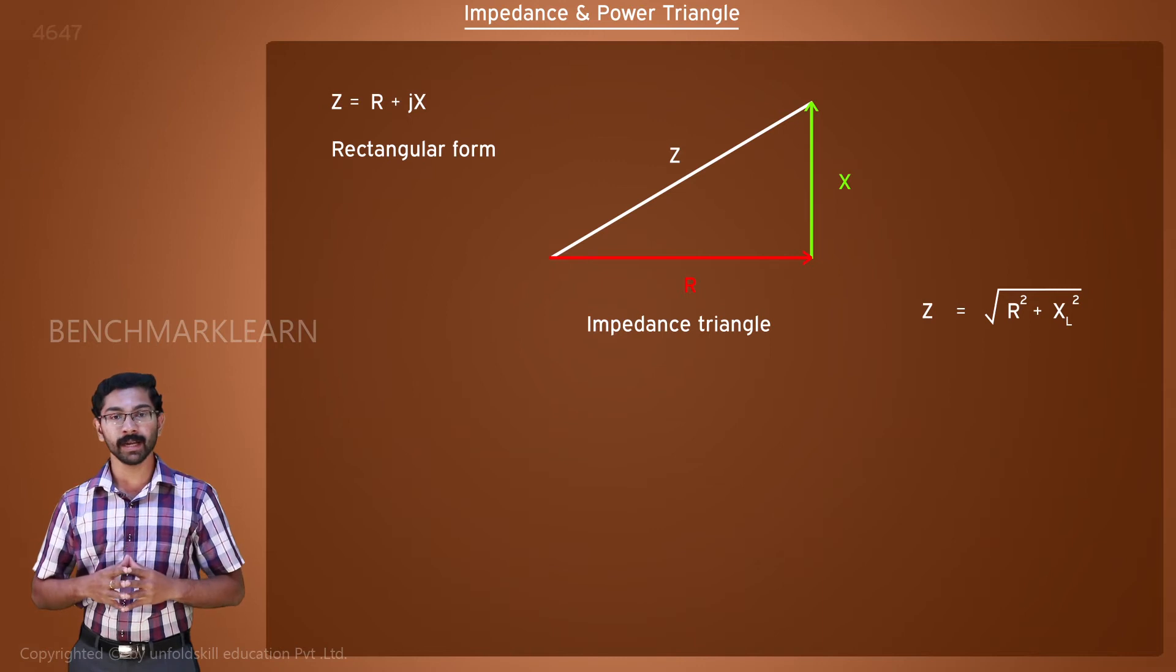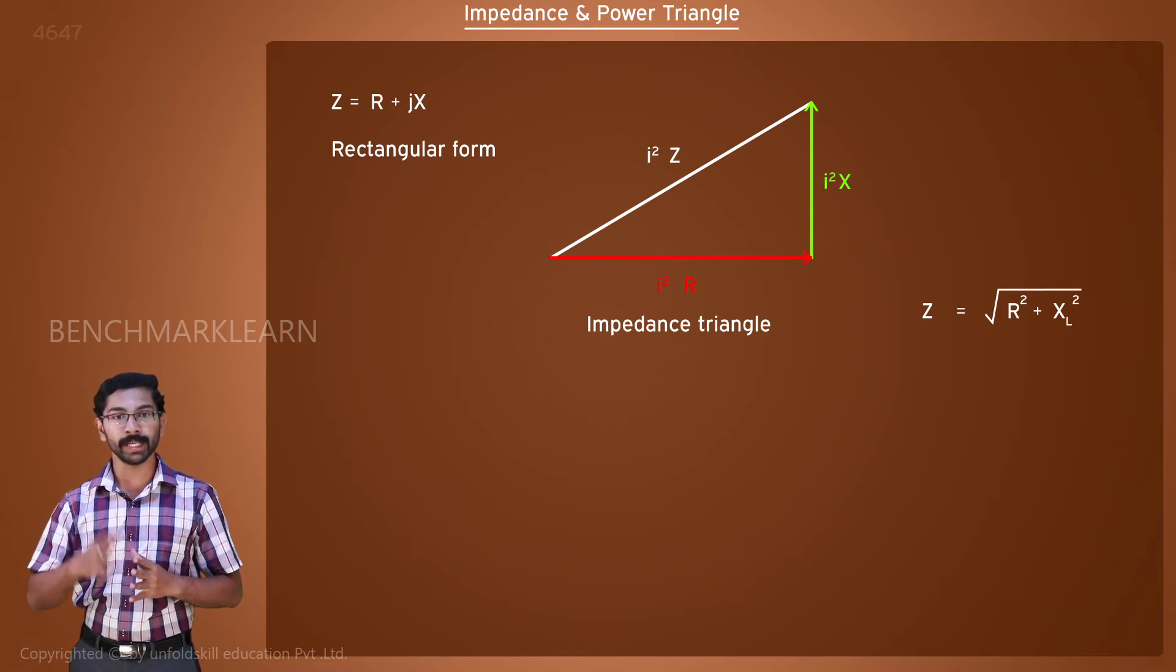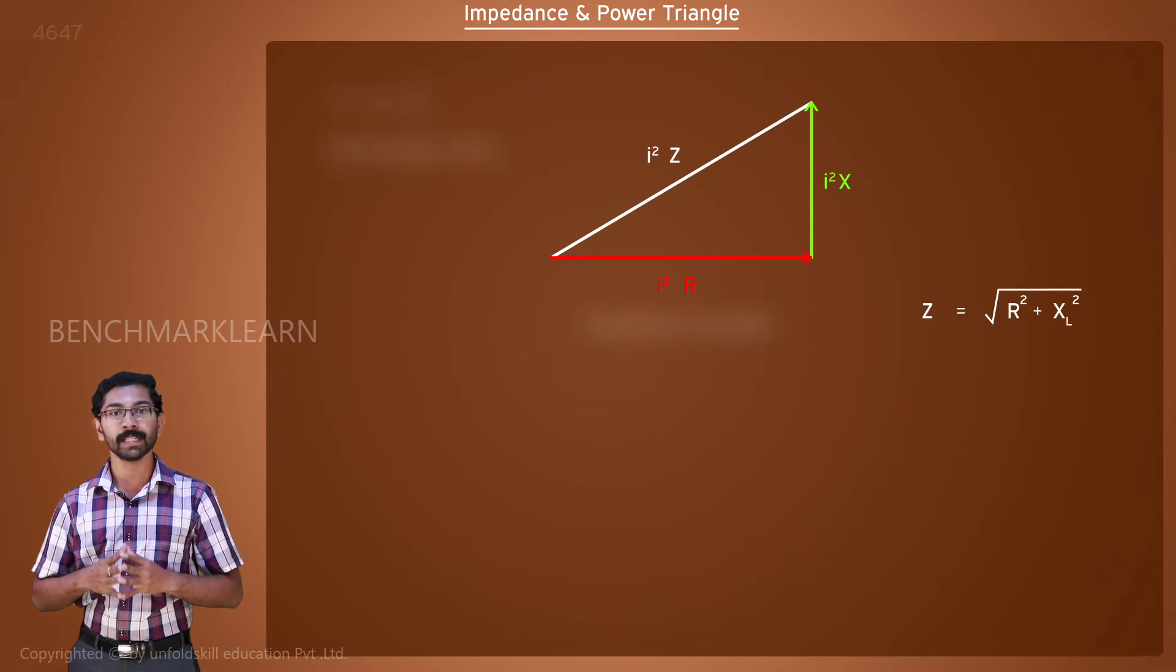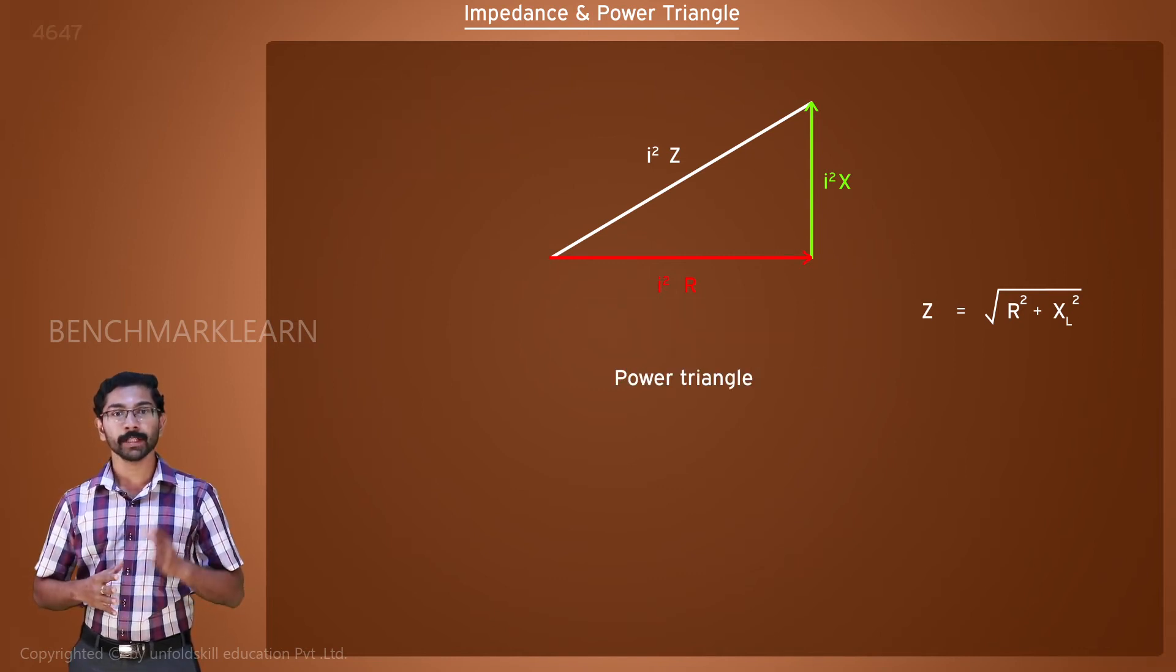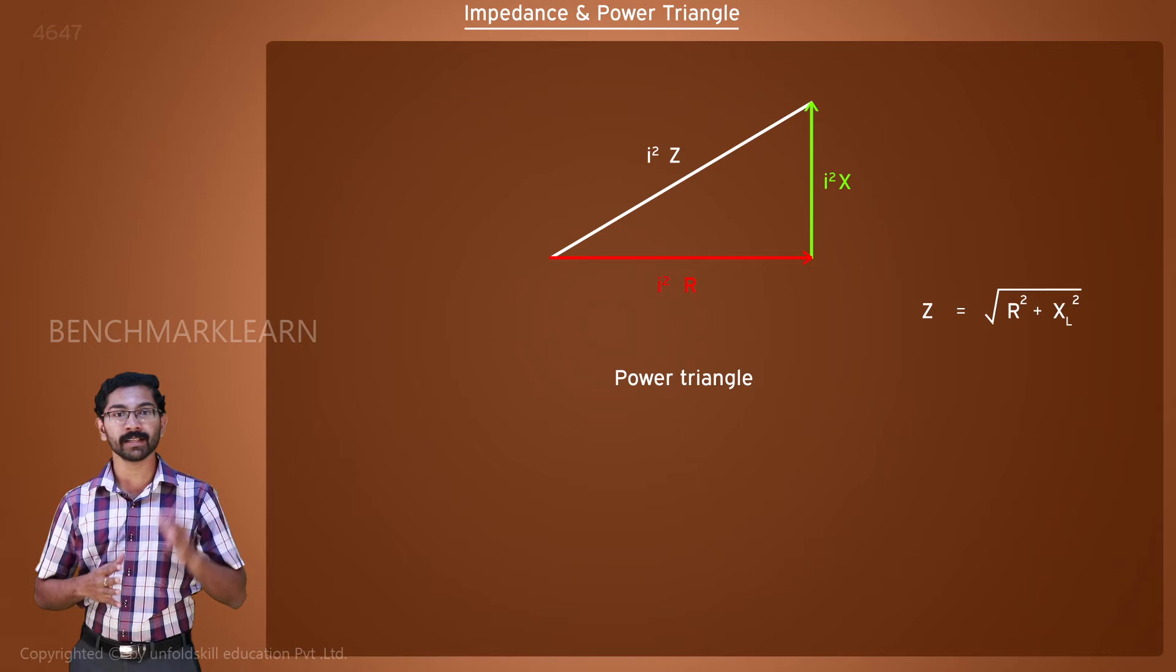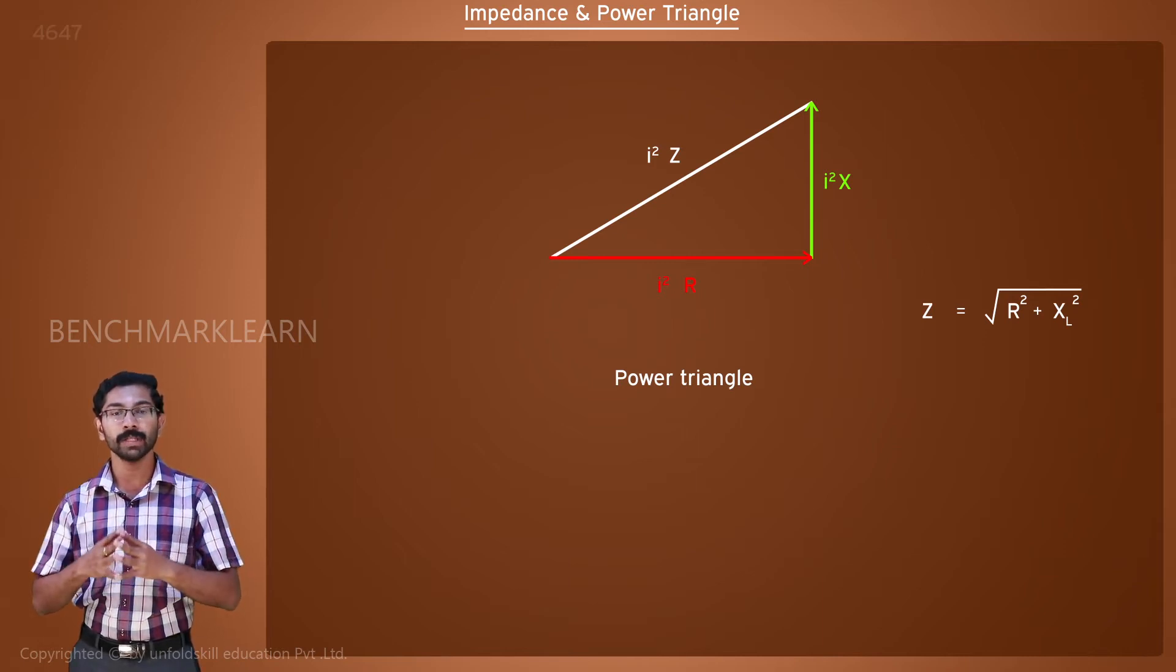The impedance triangle has three edges: resistance, reactance, and impedance. When we multiply the square of current to each of these terms, we get the power triangle. The product of current squared and resistance gives the actual work done and is called the active power.